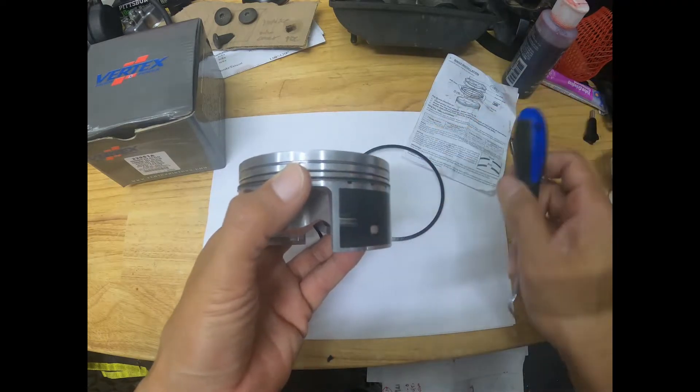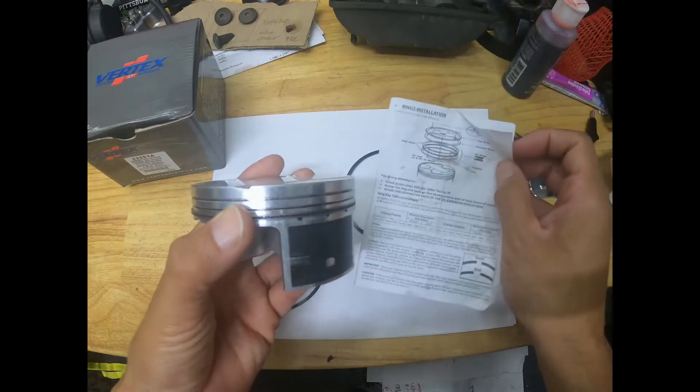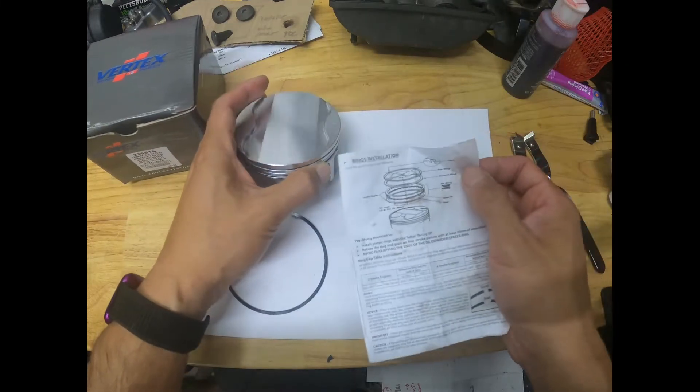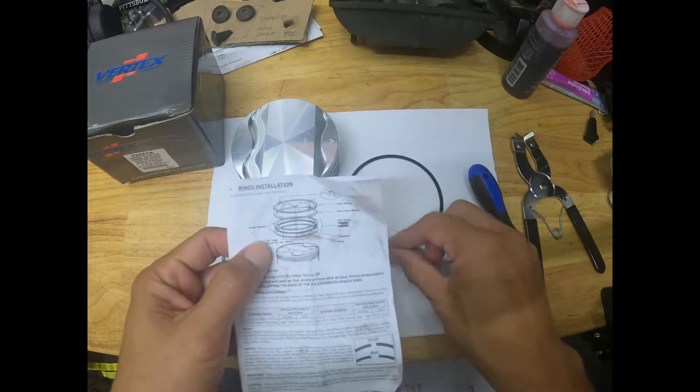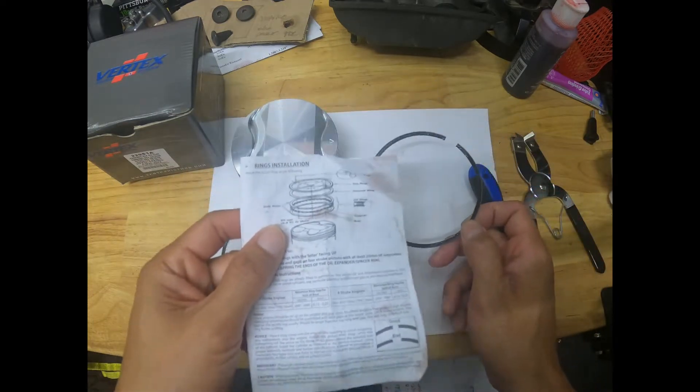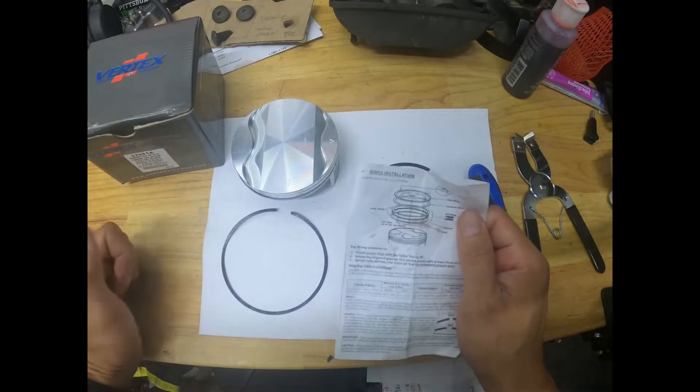The directions do not tell you that. Basically what it tells you is to put the first ring with the mark on top and then the secondary ring, but these are incorrect.